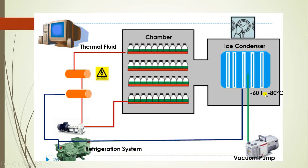Generally, the temperature in the ice condenser is maintained around minus 60 to minus 80 degrees Celsius. This is the pump for the circulation of fluid in the condenser, and a heating system for heating of the circulating fluid. This is the chamber where products are placed.